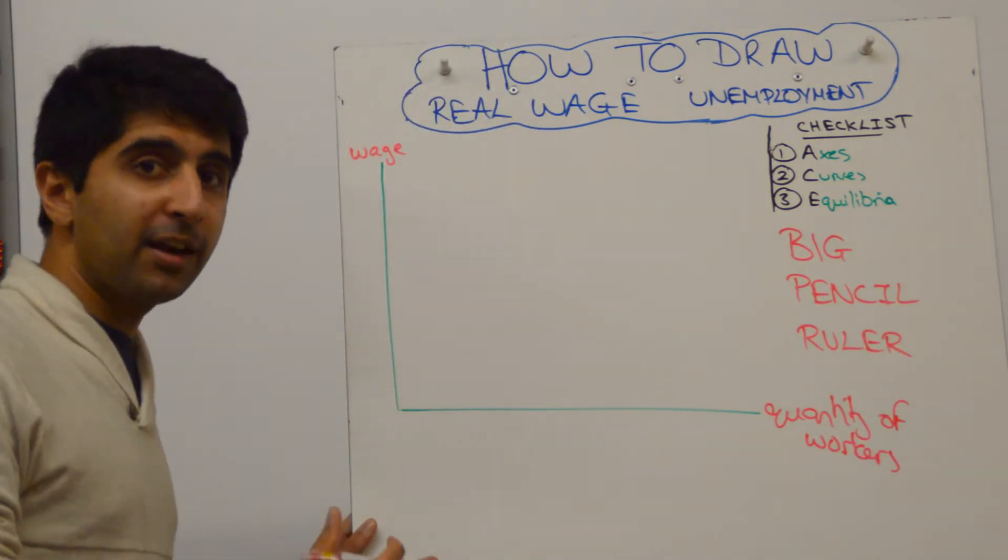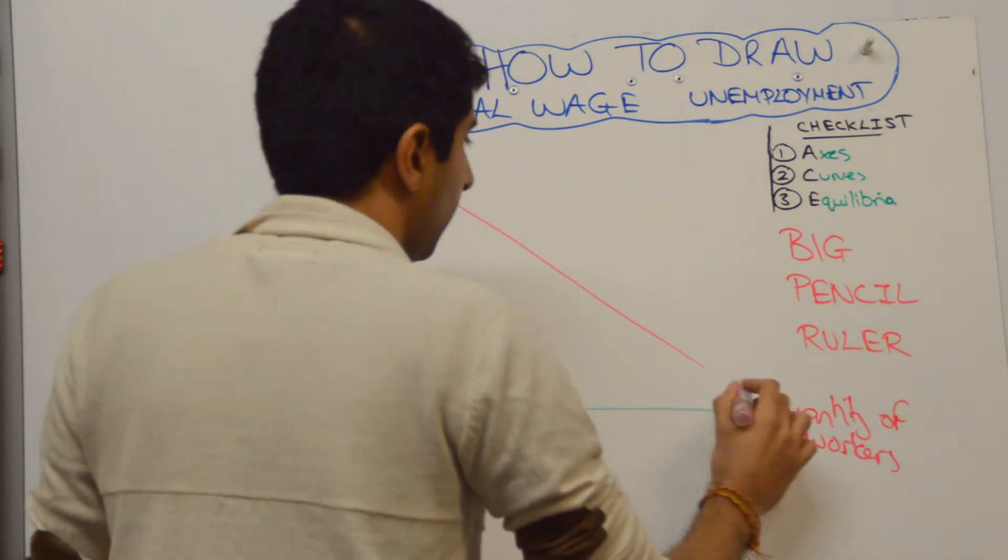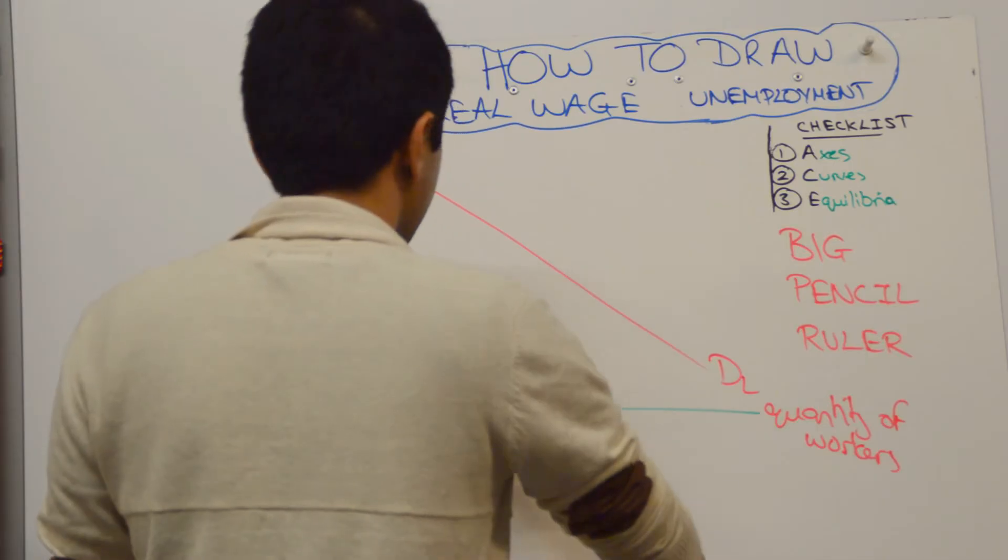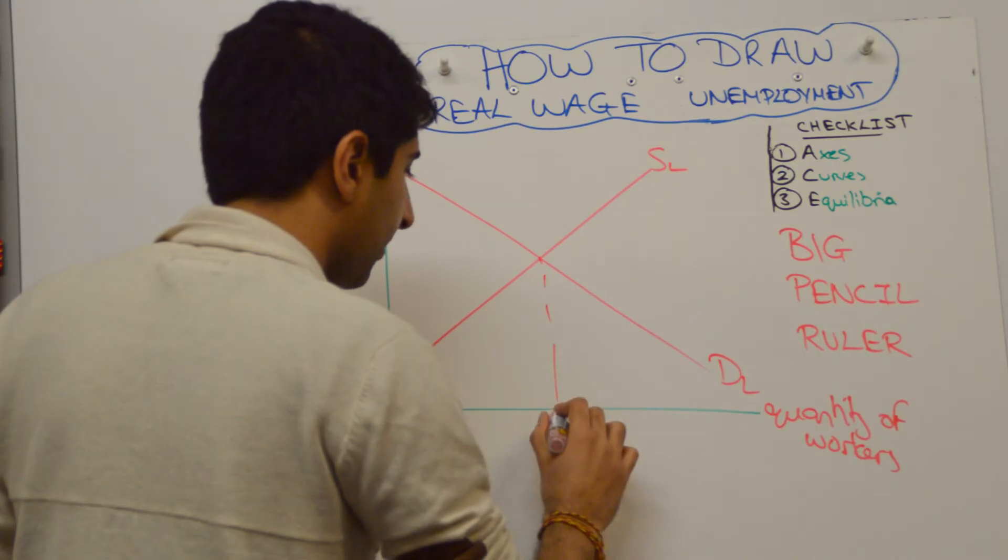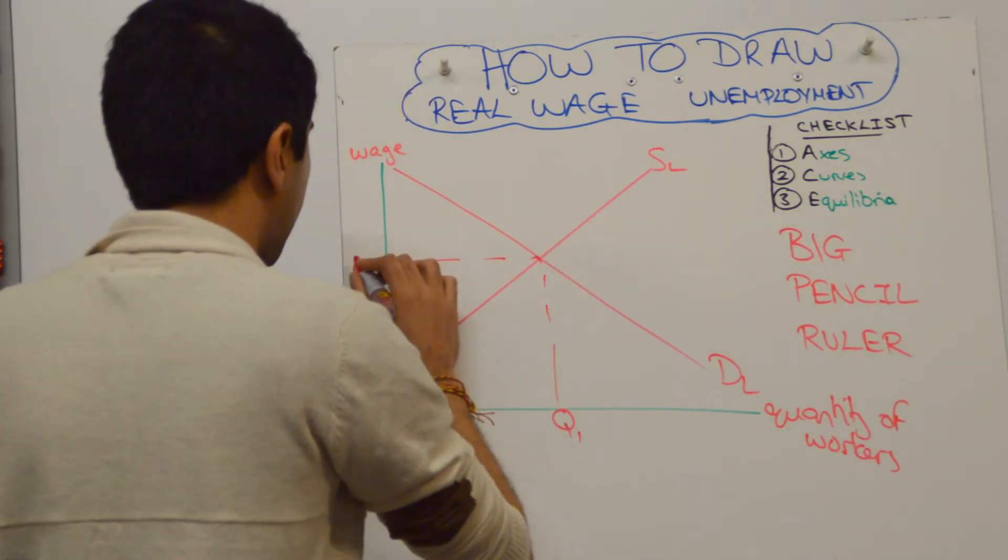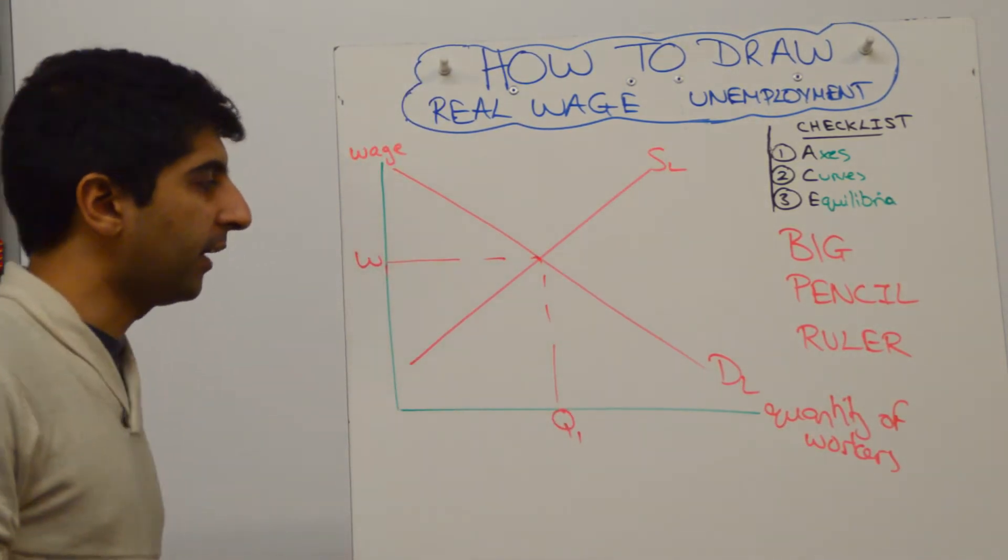Next, you want to draw a demand for labour and a supply of labour. So demand for labour and a supply of labour, DL and SL. That's the equilibrium in the labour market, call it Q1 and W1, so label all of that as you go along.